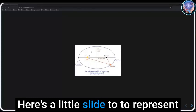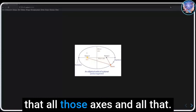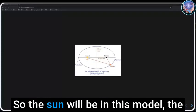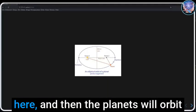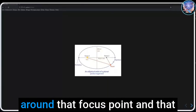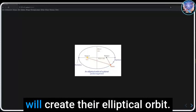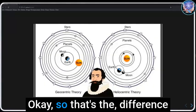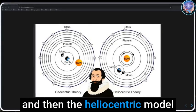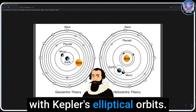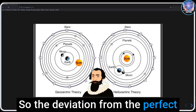Here's a little slide to represent all those axes. The sun will be, in this model, the sun will always be a focus point here, and then the planets will orbit around that focus point. That will create their elliptical orbit. That's the difference between the two models here.